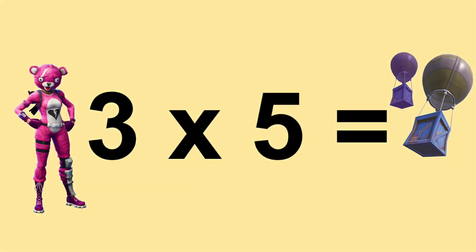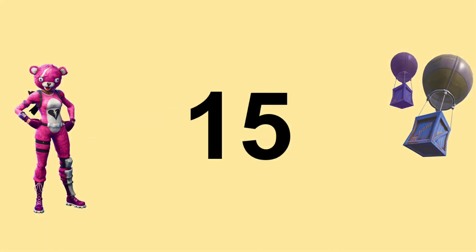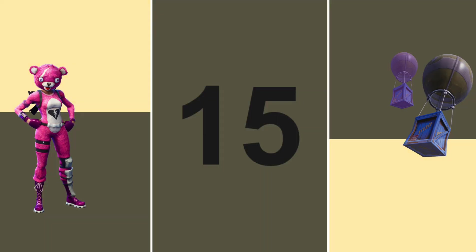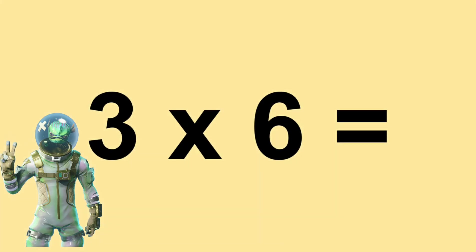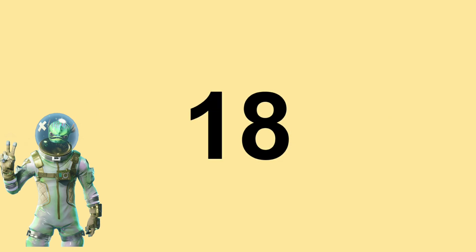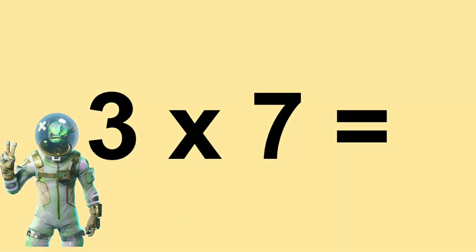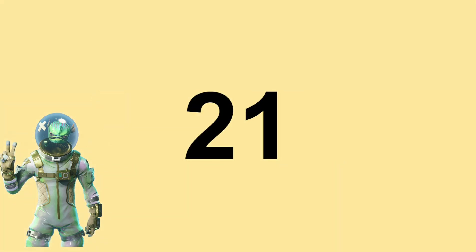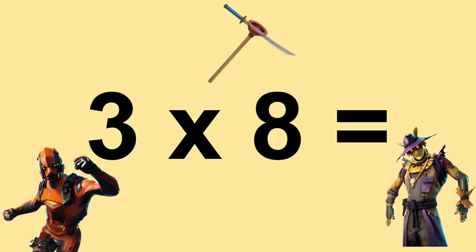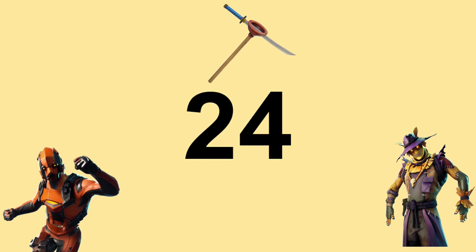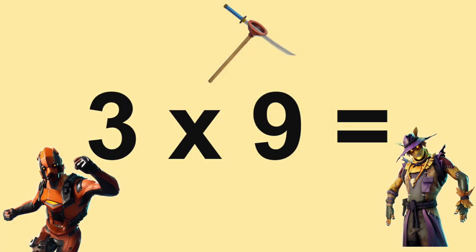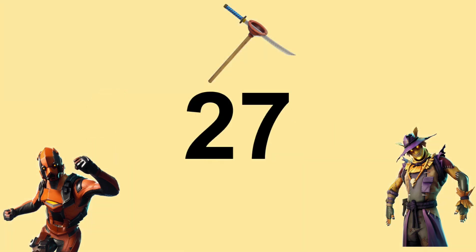Three times five equals fifteen. Three times six equals eighteen. Three times seven equals twelve. Three times eight equals twenty-four. Three times nine equals twenty-seven.